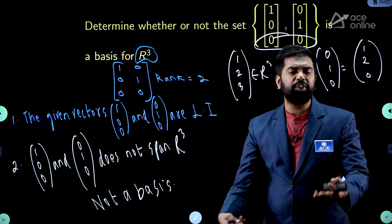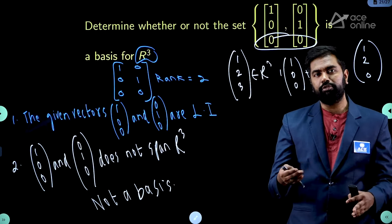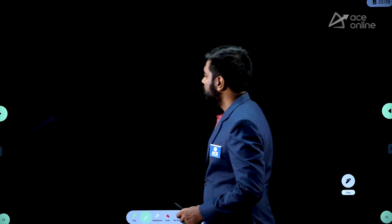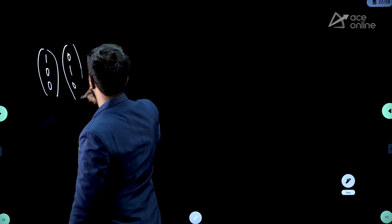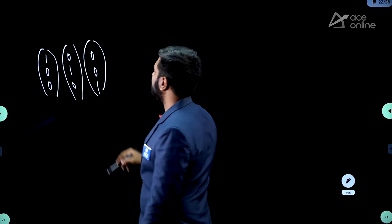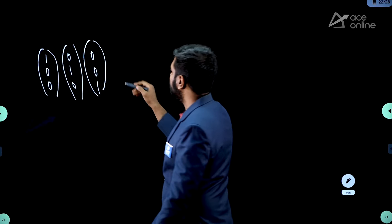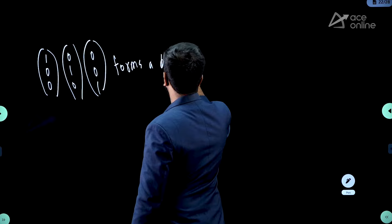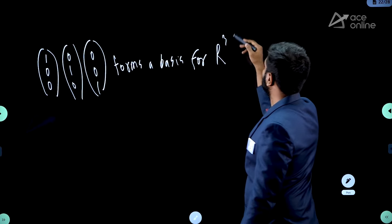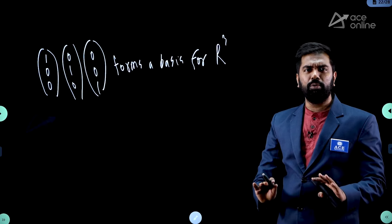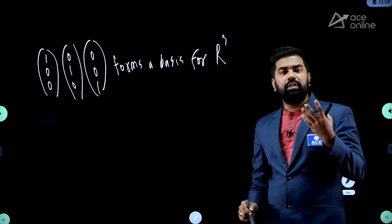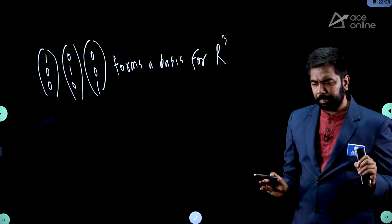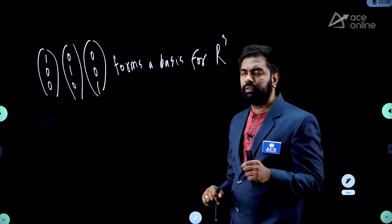Then which vectors or how many vectors form a basis for R³? You can take the columns of a 3×3 identity matrix: (1,0,0), (0,1,0), (0,0,1). These 3 vectors form a basis for R³. You can extend this for R⁴ as well — take columns of a 4×4 identity matrix. For Rⁿ, the columns of an n×n identity matrix will form a basis for Rⁿ.